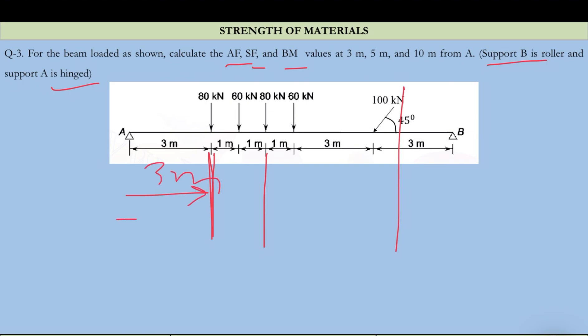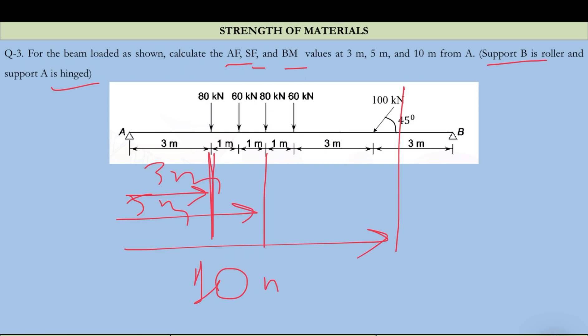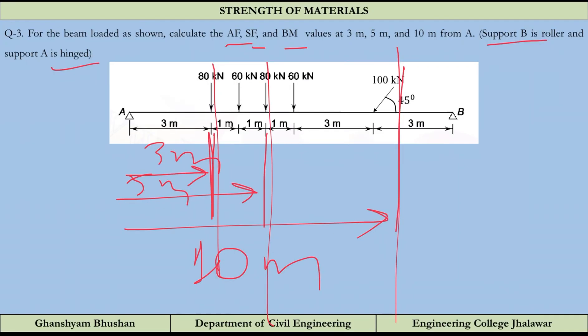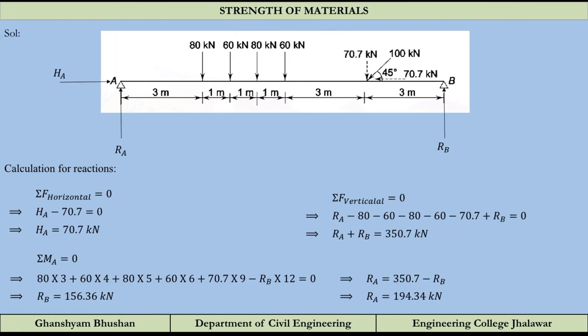We will draw the free body diagram at each of these sections - at 3m, 5m, and 10m from A - and put the unknowns: shear force, bending moment, and axial force, then calculate the values. Before doing so, we have to calculate the reactions first - that is always the first part.